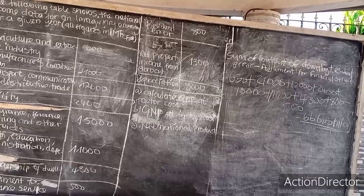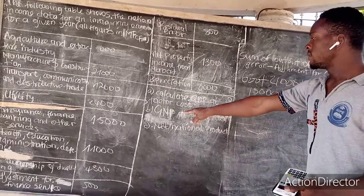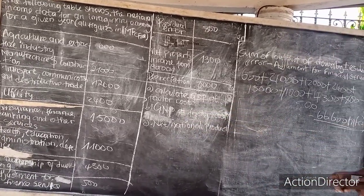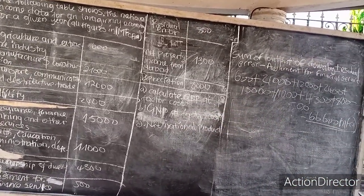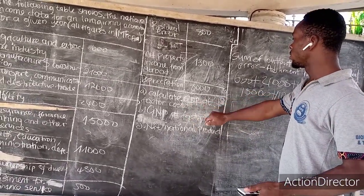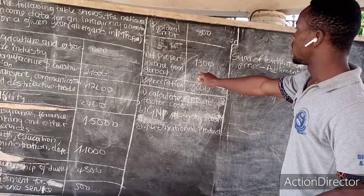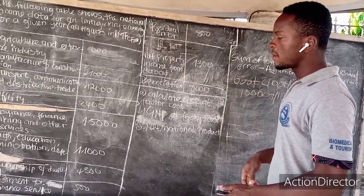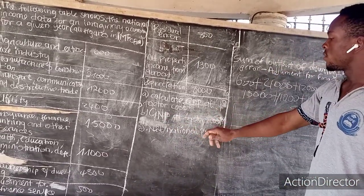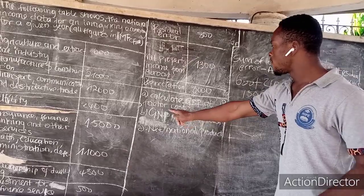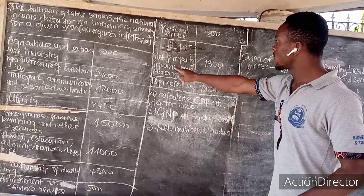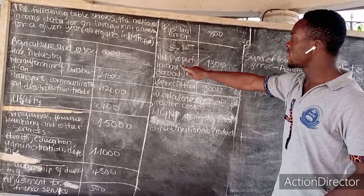In the next part of the question, we calculate the gross national product at factor cost. To do that, you take the gross domestic product at factor cost and add the net property income from abroad.